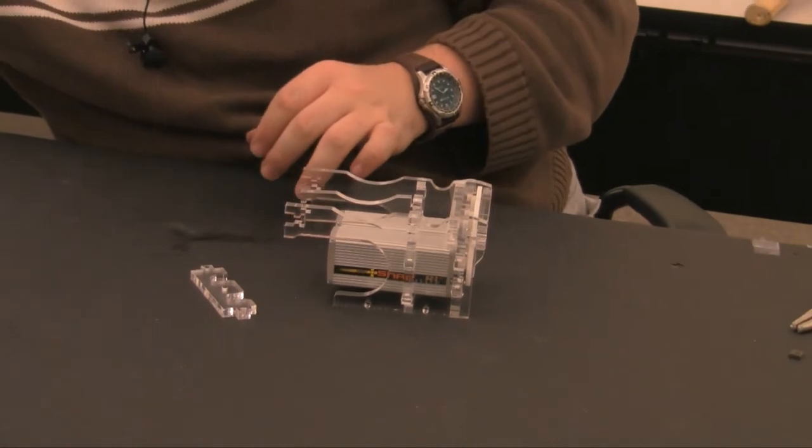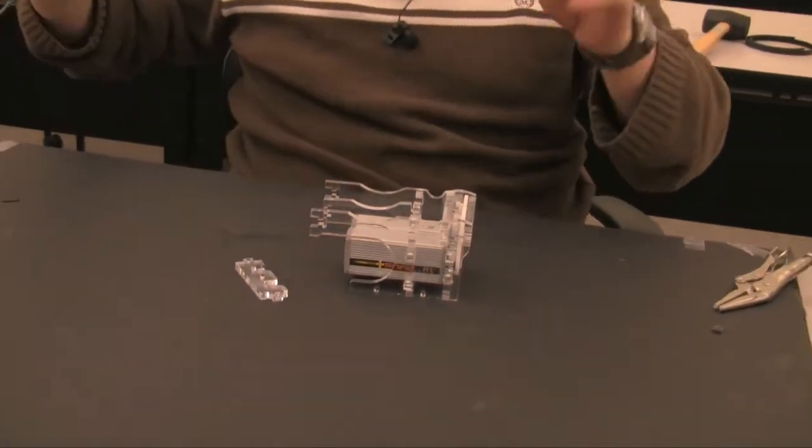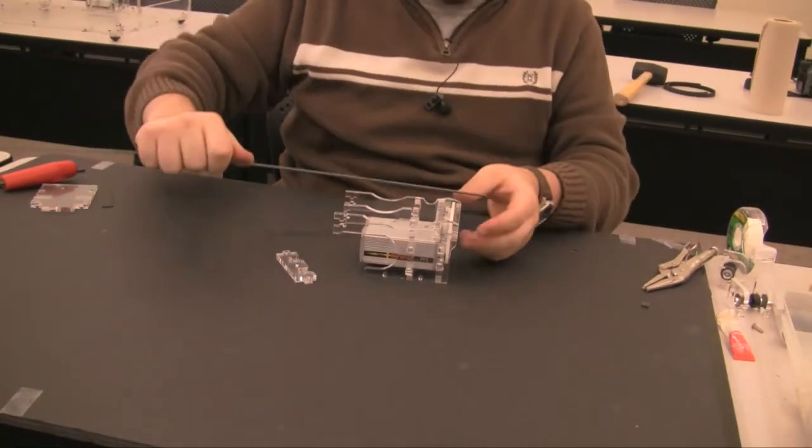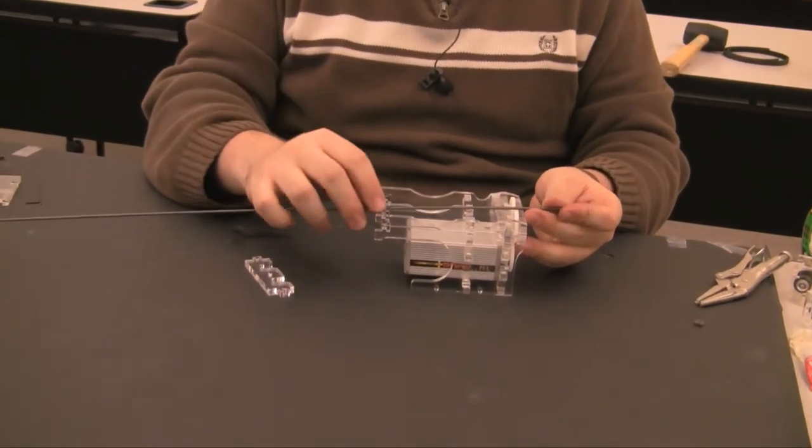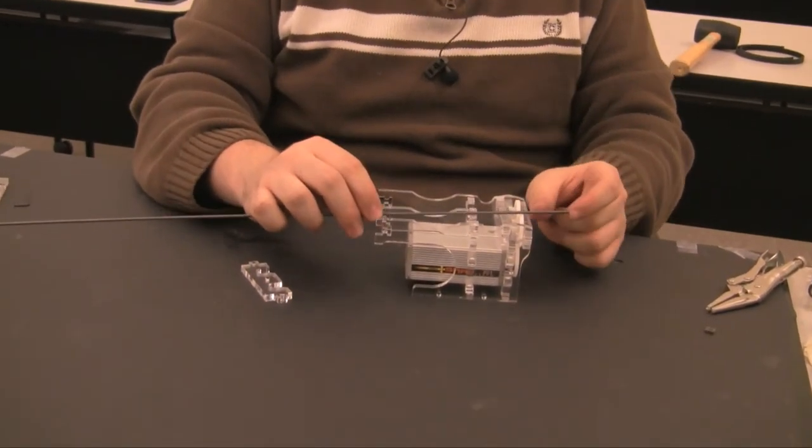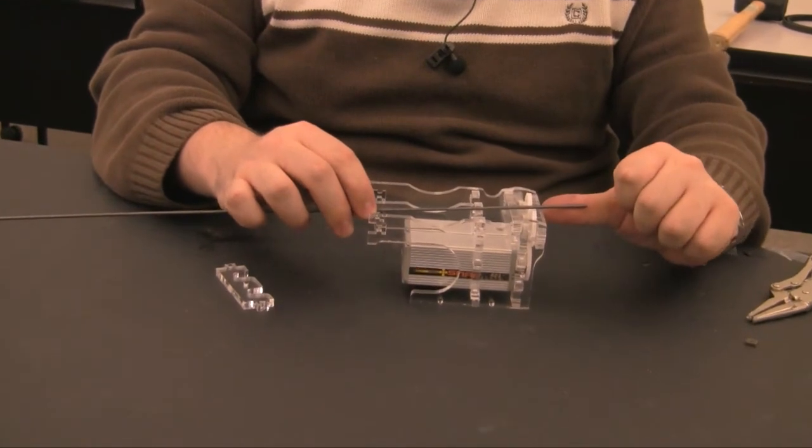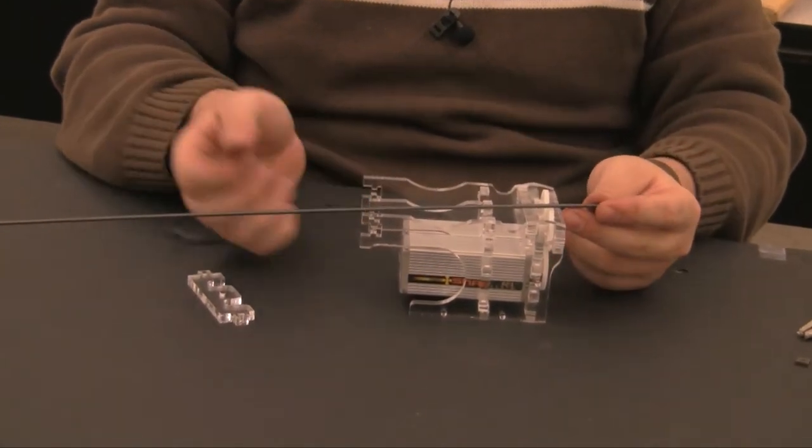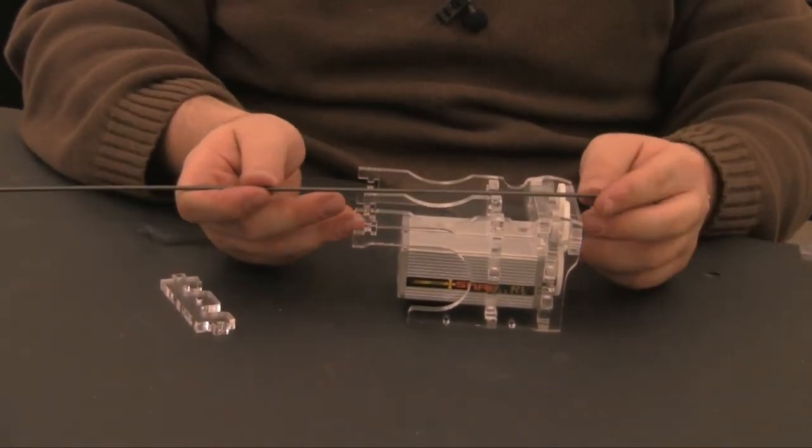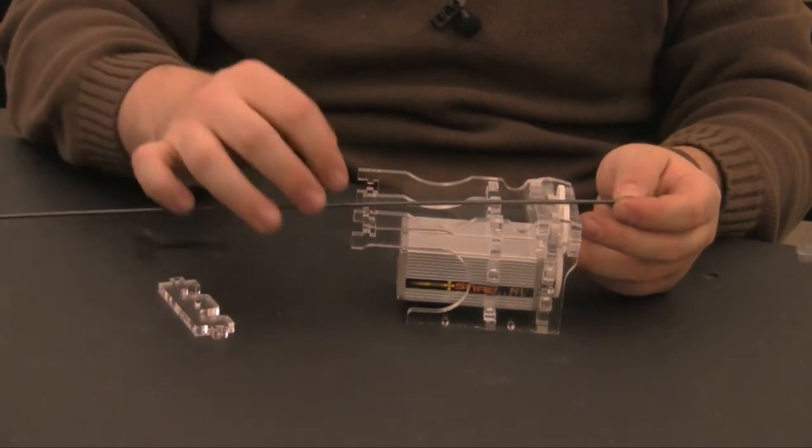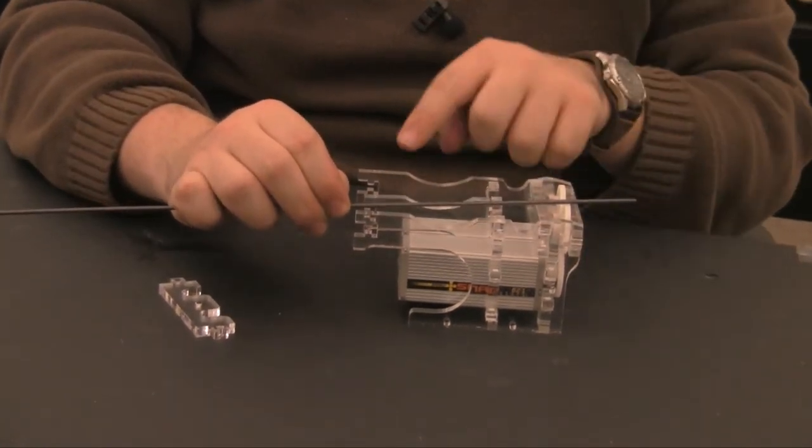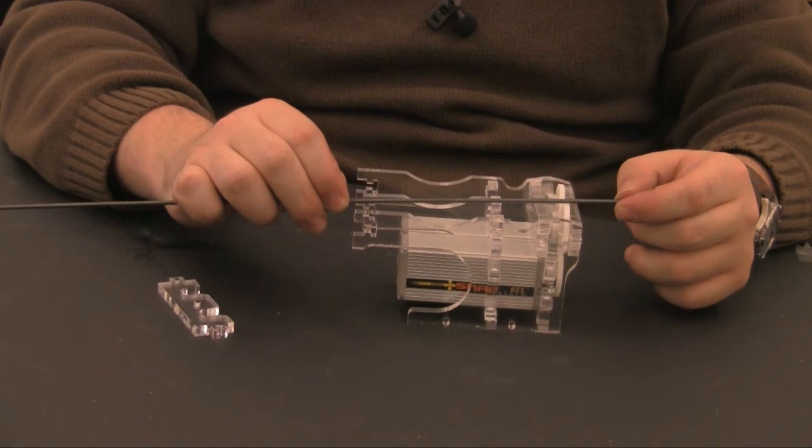You will want to take the M3 threaded rod and measure out a length going from the base to a little bit above the top, about one thumbs width. The exact length doesn't matter as long as you leave sufficient room on the top. You will want to cut it and make two identical ones for the drive interface.